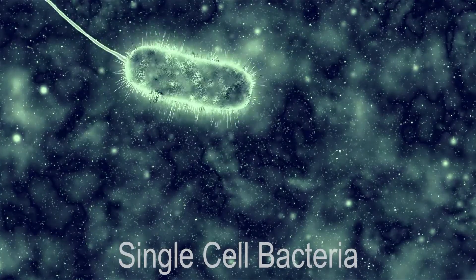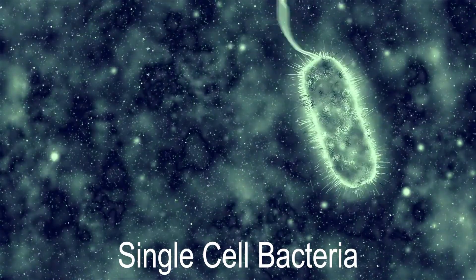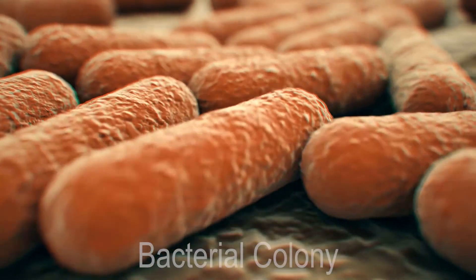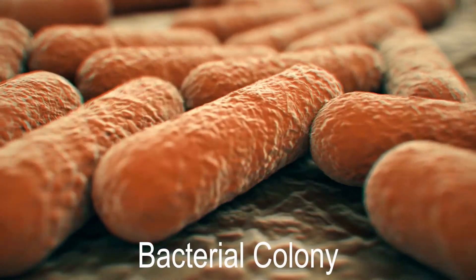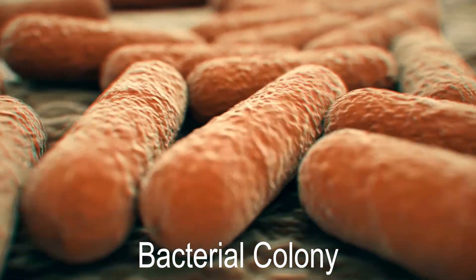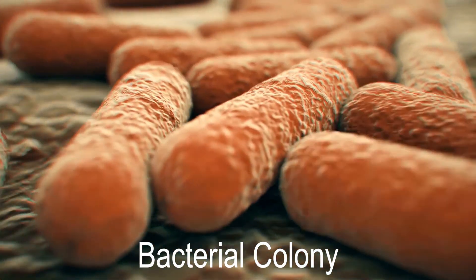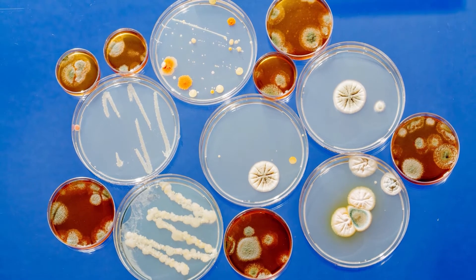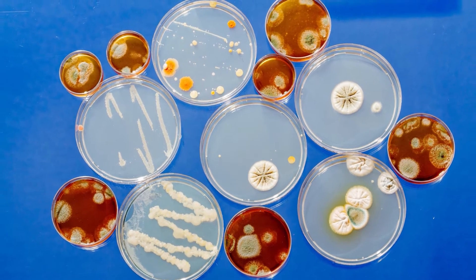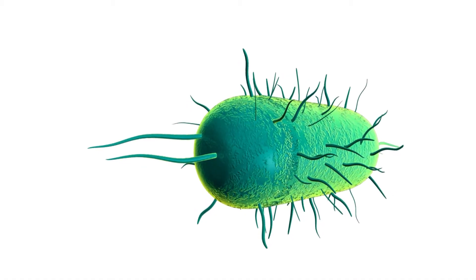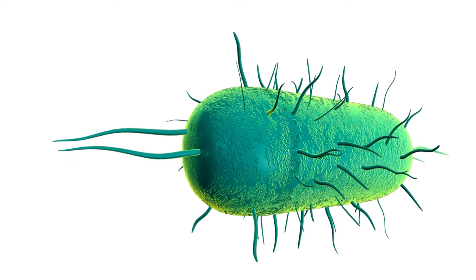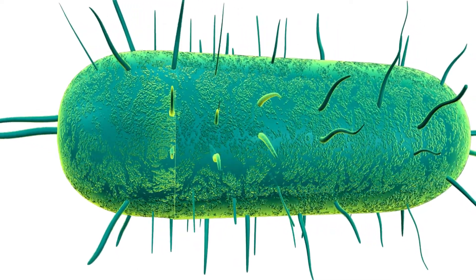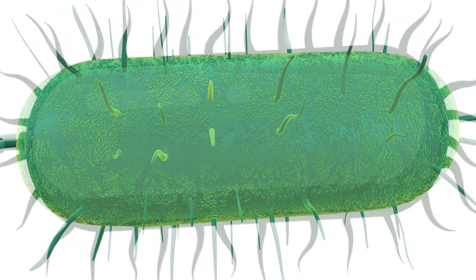Bacteria can exist as a single cell or in a group of similar cells closely associated with each other, called colonies. When present in colonies, they may join together in clusters or chains. Bacterial cells are prokaryotic, which means that they lack a membrane-bound nucleus and membrane-bound organelles.